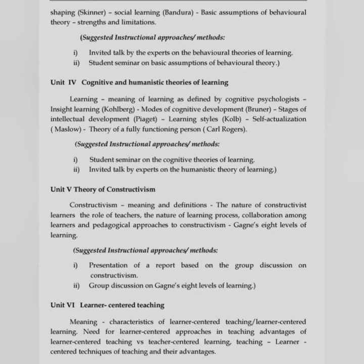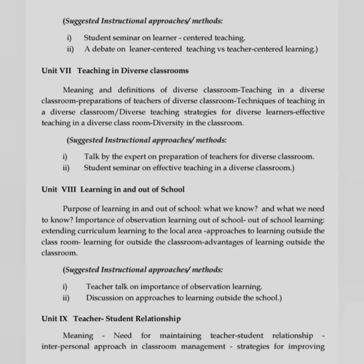Unit 7 is Teaching in Diverse Classroom: meaning and definition of diverse classroom; teaching in a diverse classroom; preparation of teachers for a diverse classroom; techniques of teaching in a diverse classroom — diverse teaching strategies for diverse learners; effective teaching in a diverse classroom and diversity in the classroom. Unit 8 is Learning In and Out of School: purpose of learning in and out of school; what we know and what we need to know; importance of observation learning out of school; extending curriculum learning to the local area; approaches to learning outside the classroom; advantages of learning outside the classroom.